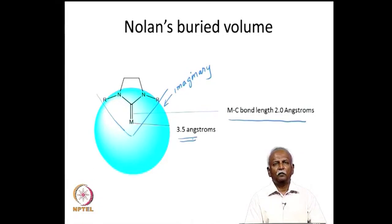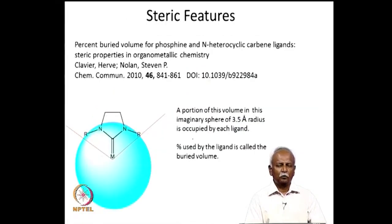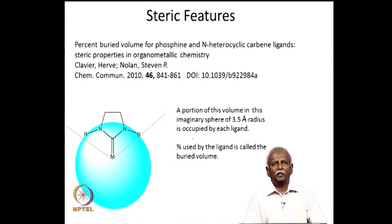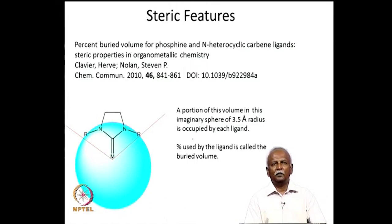One can then estimate what percentage of the total 3.5 Å sphere volume is occupied by the ligand — this percentage buried volume is used as a measure of the ligand's steric size. This concept converts Tolman's 2D cone angle into a 3D volume and can be applied to phosphines, NHCs, or any ligand you want to characterize. The 2 Å and 3.5 Å values are two arbitrary parameters that are unavoidable given the complexity of different metals and bond lengths.